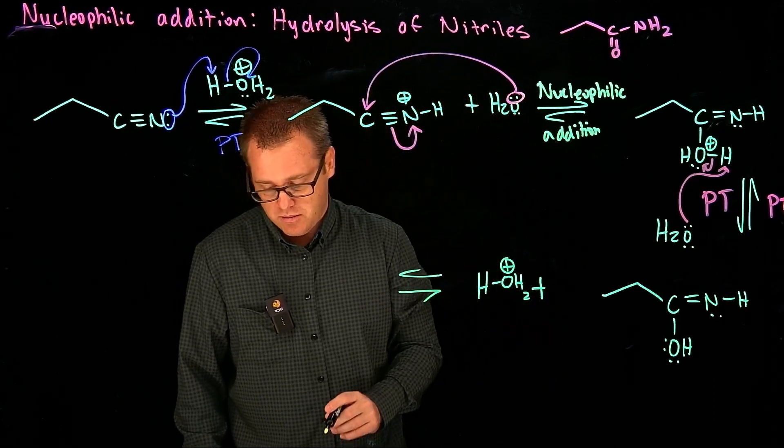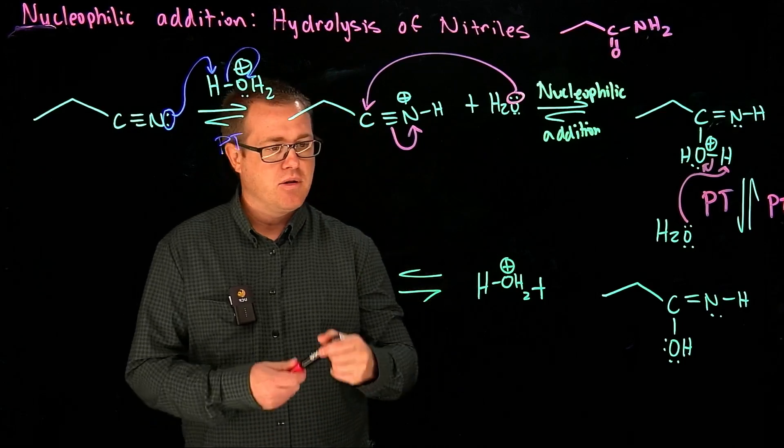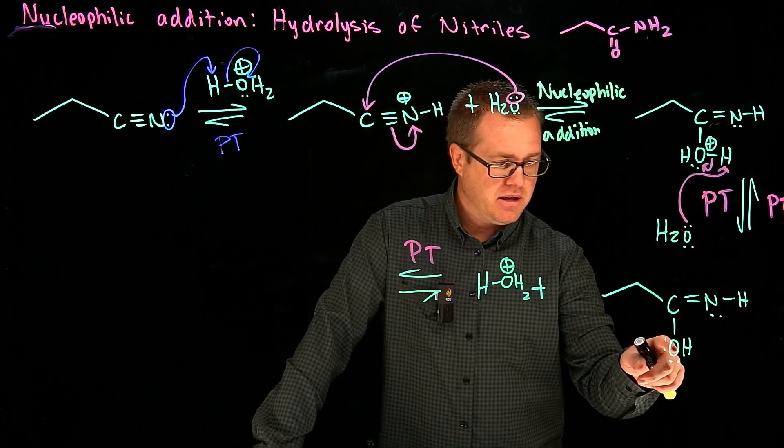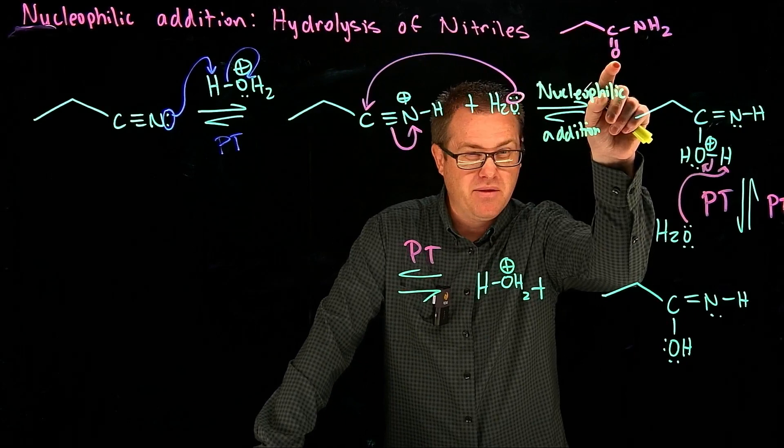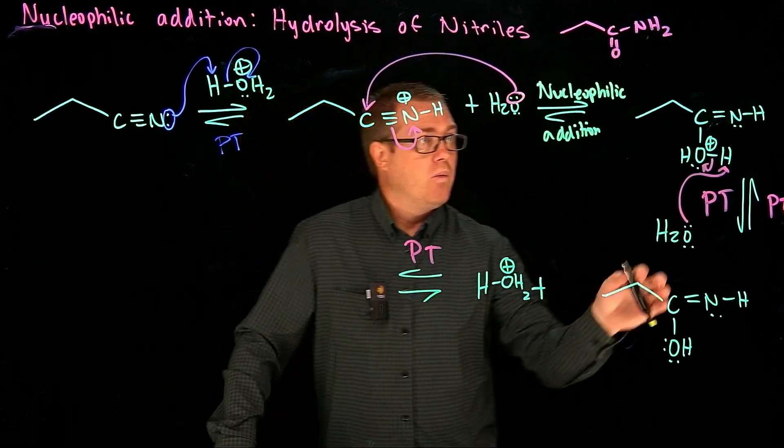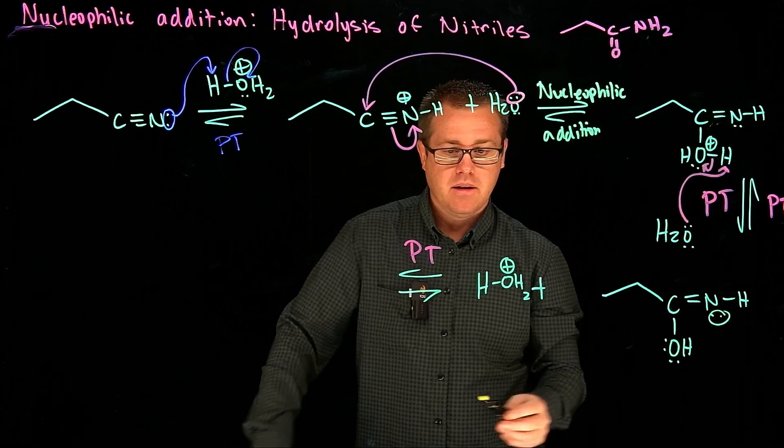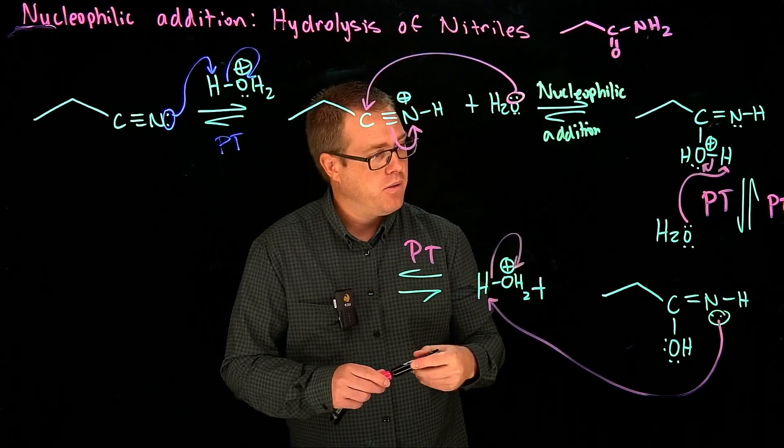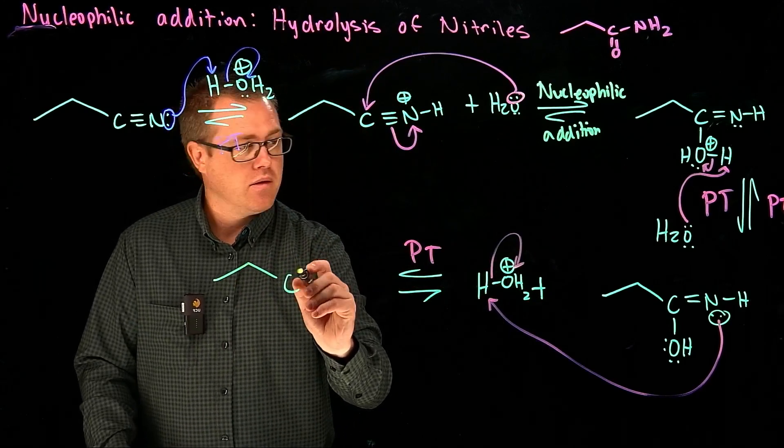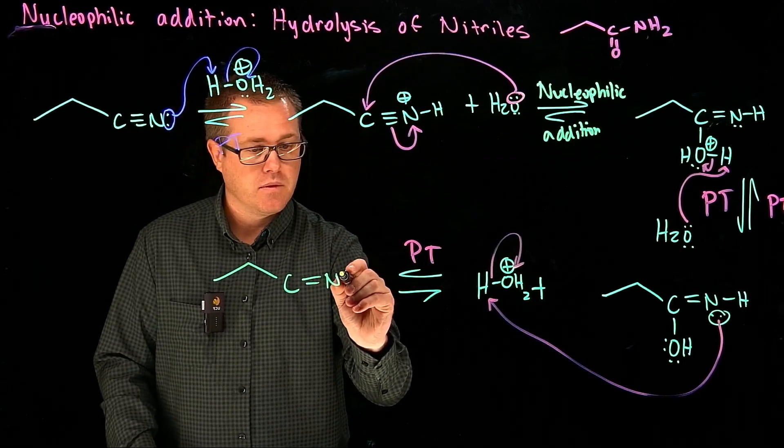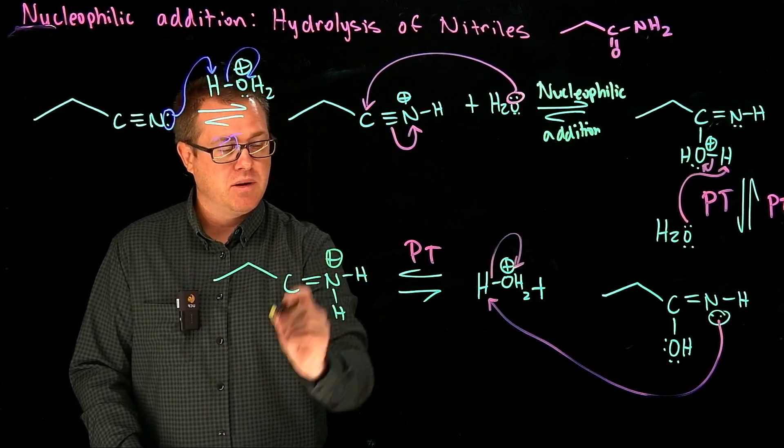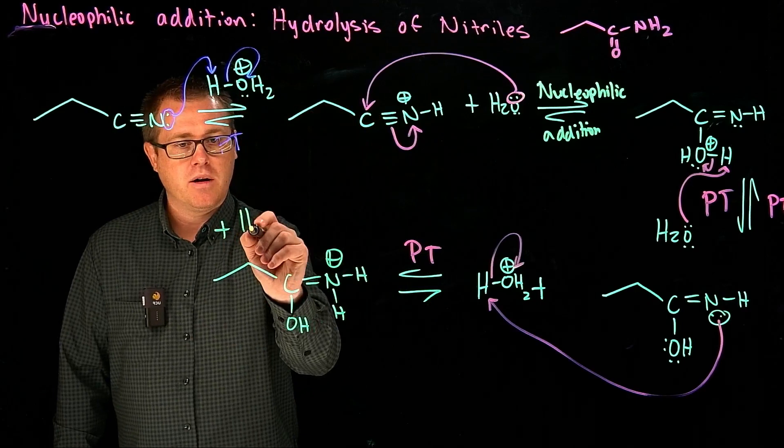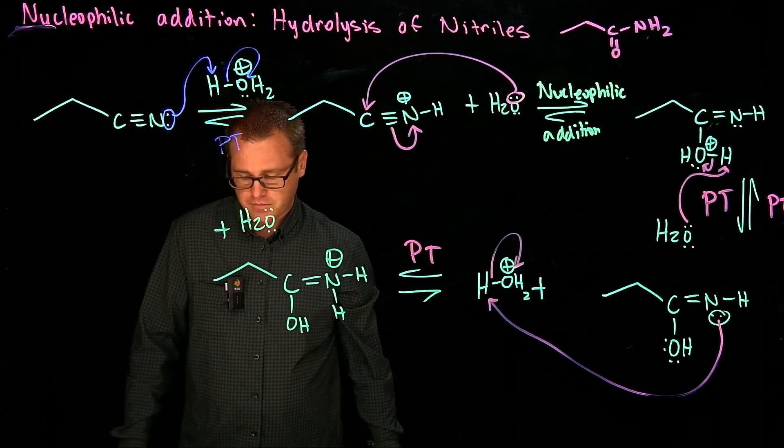But what did we just also generate? We generated some more acid from this step right here. So, let's do another proton transfer. Just lots and lots of proton transfers, really, in this mechanism. So, what do we want to do? Do we want to add a hydrogen on this oxygen? No, because we're trying to get rid of them. So, what if we want to use this lone pair right there and we can do a proton transfer? So, now we have nitrogen with four bonds, so that's going to be positively charged. And then we have our OH, like that. So, that would have generated water again, like so.